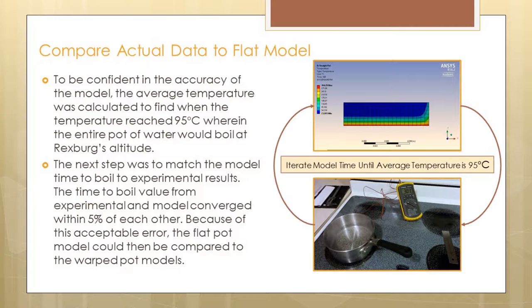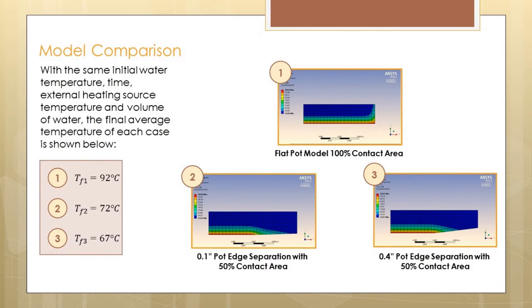We did a model comparison and used the same conditions for each model, including the time to evaluate. For each model, we ran the simulation: the flat pot, one warped pot with 0.1 inch edge separation from the surface, and another with 0.4 inch edge separation. Both of those had 50% contact area compared to the flat pot.